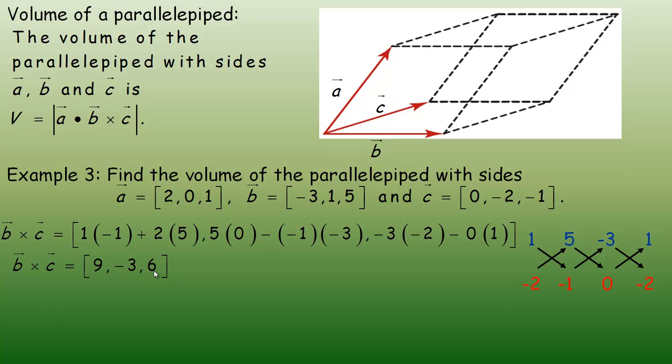Now we need to take the dot product of the third vector, the a vector, with that cross product. Here's my a vector, the 2, 0, 1 vector, and the b cross c, 9, negative 3, 6. I have absolute value symbols because I just want the positive value since this is volume, which can't be negative. We go 2 times 9 is 18, plus 0 times negative 3 is 0, plus 1 times 6 is 6. 18 and 6 add to 24. So the volume would be 24 cubic units. And that's the end of the tutorial.